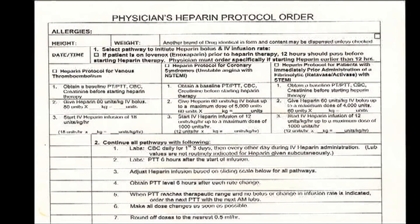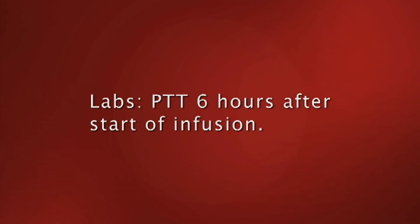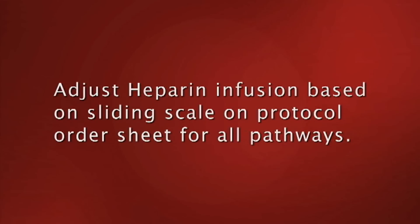All pathways will receive the following, all listed on your protocol orders. Number one: CBC daily for the first three days. Number two: PTT six hours after start of the infusion. Number three: adjust heparin infusions based on the sliding scale on protocol order sheets for all pathways.